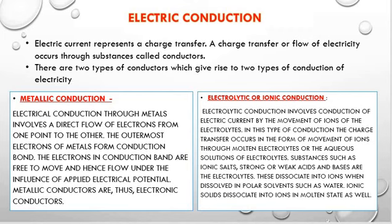Metallic conductors, or metallic conduction. Electric conduction through metals involves the direct flow of electrons from one point to another. The outermost shell electrons of metals form a conduction band, and the electrons in the conduction band are free to move. Hence the flow occurs under the influence of electric potential. So metallic conductors are electronic conductors.